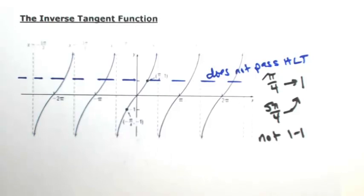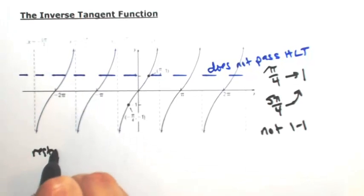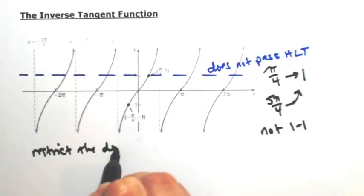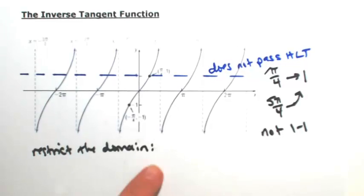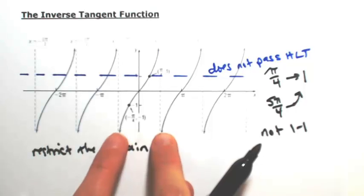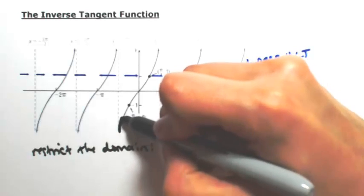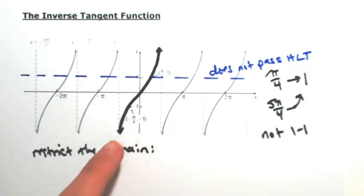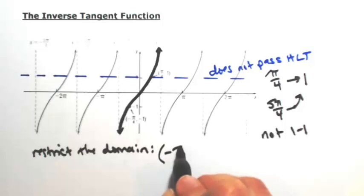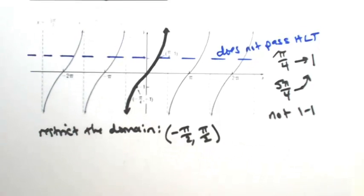So what we're going to have to do is restrict the domain so that it will pass the horizontal line test. There are many places we could do this, but as a mathematical community, we've decided to do that right around the origin — just this one cycle from negative π/2 to π/2. That will pass the horizontal line test. Notice that at negative π/2 and at π/2, the tangent is not defined, so we can't include those endpoints. As long as we restrict between negative π/2 and π/2, the tangent function will have an inverse.